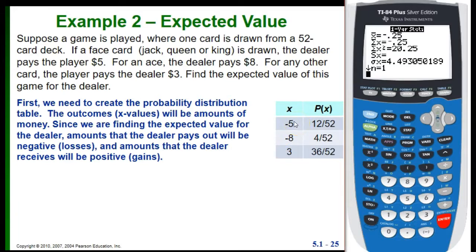So here's what our probability distribution would look like. So this is if we have a face card. In this case, the dealer has to pay out $5. So that means that we put a negative 5 in there for the outcome. If it's an ace, the dealer has to pay out $8. So the dealer is losing $8. If it's any other card, then the dealer actually gets paid $3. So in that case, it's a positive outcome, a positive 3. And here are our probabilities. And these come from just how many of each type of card there are in the deck. Since there are 12 face cards, then the probability of drawing a face card is 12 over 52. Since there are 4 aces in the deck, the probability of drawing an ace is 4 over 52. And the 36 over 52 is just what's left over. So all the other cards that aren't face cards or aces, there are 36 of those. So we have our x values and our probabilities.